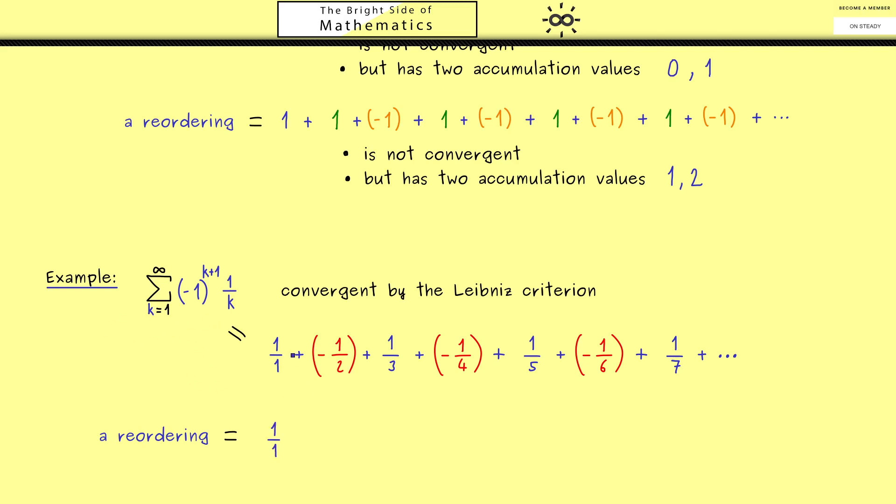We'll take 2 positive numbers before the next negative number comes. First we add 1 over 1 plus 1 third, then subtract 1 half. Next, take these 2 positive numbers, then subtract 1 quarter. We continue with this rule, not missing any numbers and not adding other ones.